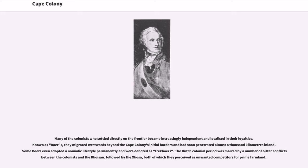Many of the colonists who settled directly on the frontier became increasingly independent and localized in their loyalties. Known as Boers, they migrated westwards beyond the Cape Colony's initial borders and had soon penetrated almost a thousand kilometers inland. Some Boers even adopted a nomadic lifestyle permanently and were denoted as Trek Boers.